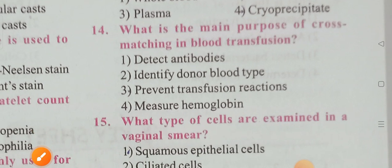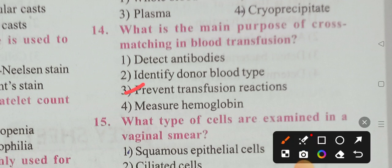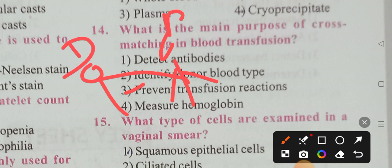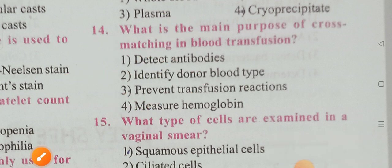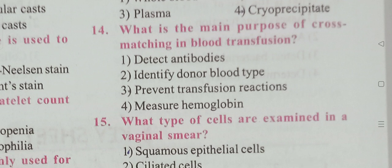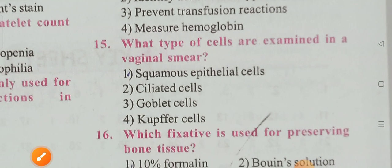What is the main purpose of cross-matching in blood transfusion? Options: detecting antibodies, identify donor blood type, prevent transfusion reactions, measure hemoglobin. Option 3 is the correct answer — before starting the blood transfer, we do cross-matching between donor and recipient to prevent transfusion reactions.